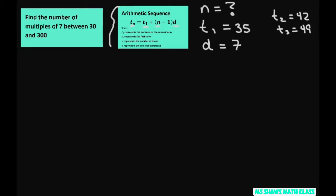Now our last term, so this would be our last term is t sub n. That one's a little harder to define. A good way to do that is just do long division and take 7 into 300.